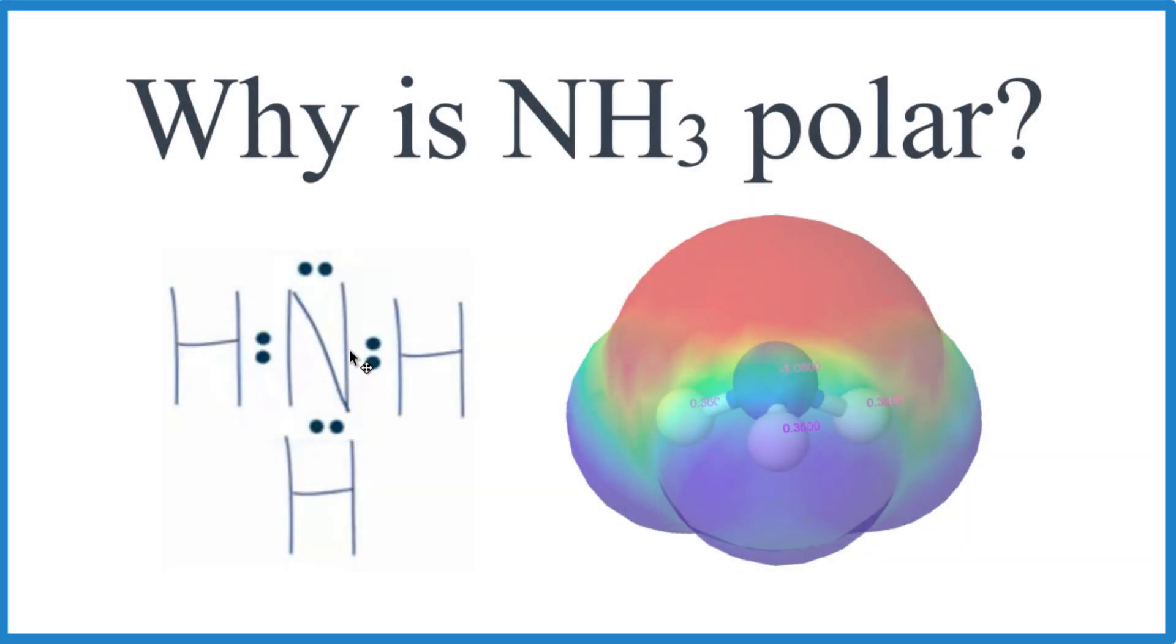Since nitrogen is more electronegative, the electrons in these bonds here are going to spend more time with the nitrogen, and it's going to make it more negative. So right up here we have the negative, and down here it's more positive.